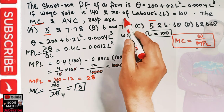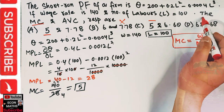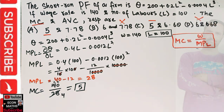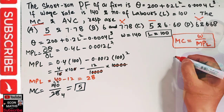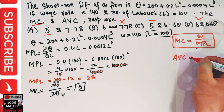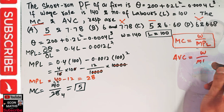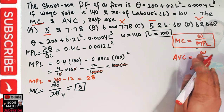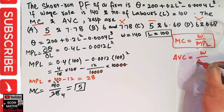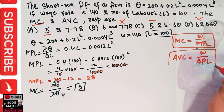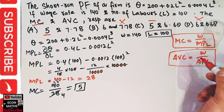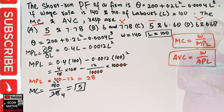Since marginal cost is 5, options with values other than 5 are eliminated. Now let's calculate the average variable cost. Average variable cost equals wage rate divided by the average product of labor. We need to use this relationship to find AVC.